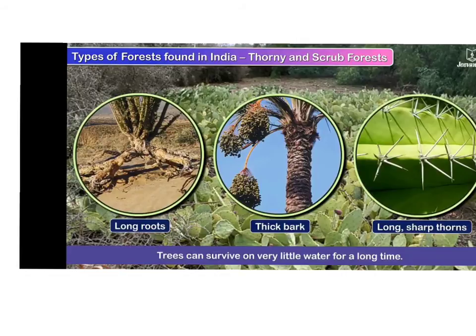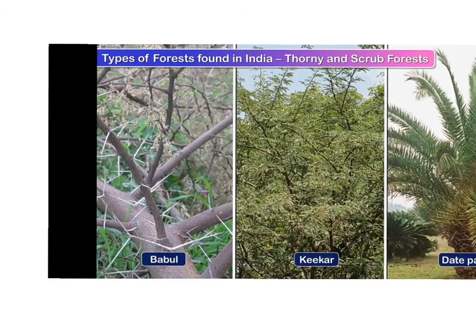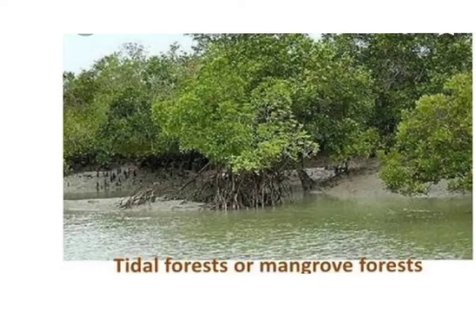The main trees found in these forests are Babool, Kikar, and Datemam. These are the trees mostly found in thorny and scrub forests. Then the last type is the tidal forest.